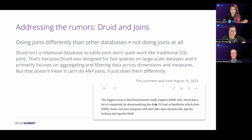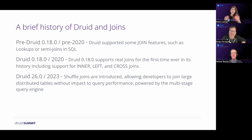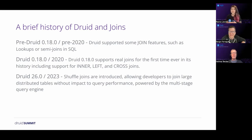This misconception still shows up in comments from this year. Druid join support goes back a while: pre-2020 in Druid 0.18, it supported lookups, semi-joins, and SQL. Around 2020, real joins first came to be. In 2023, Druid 26 introduced shuffle joins via the multi-stage query engine (MSQ), allowing developers to join distributed tables without impacting query performance.